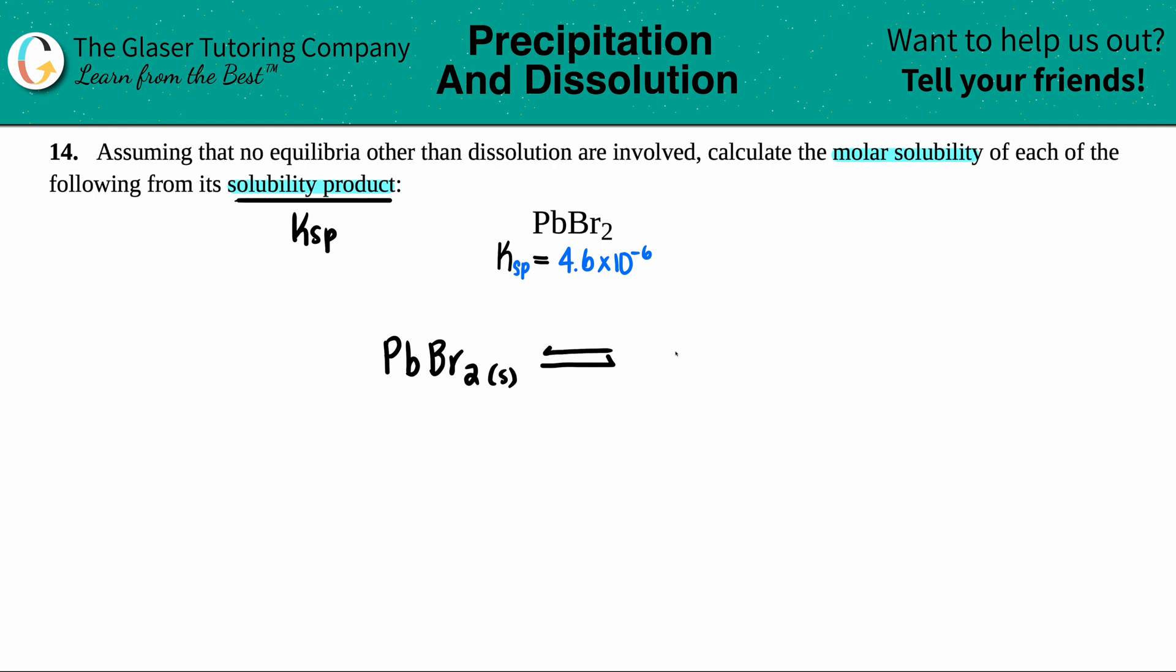And then we have double arrow because we're dealing with K values, equilibrium. And then I have my two ions. So I'll start with that. So Pb plus Br.